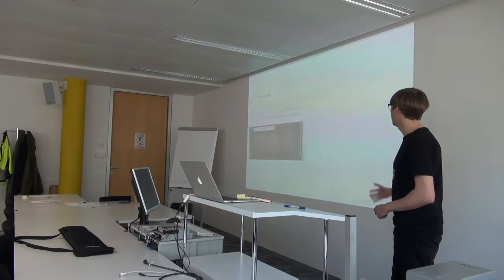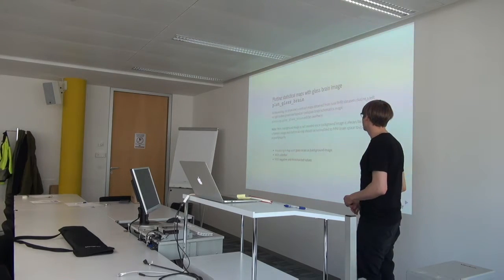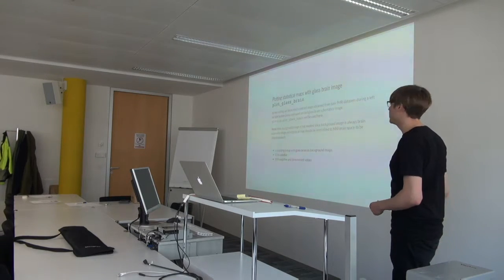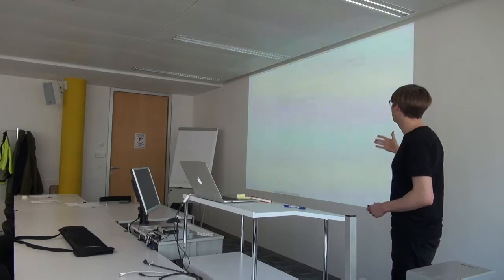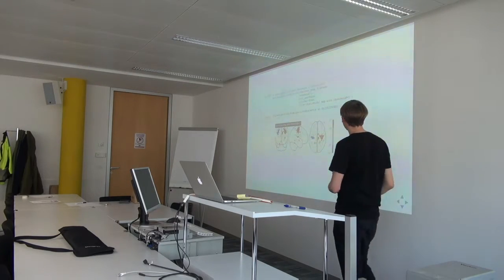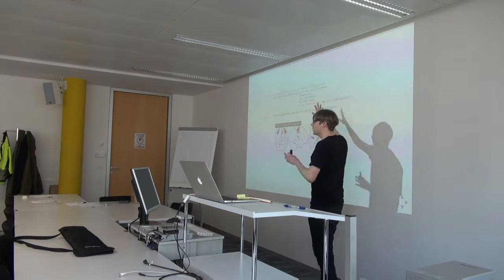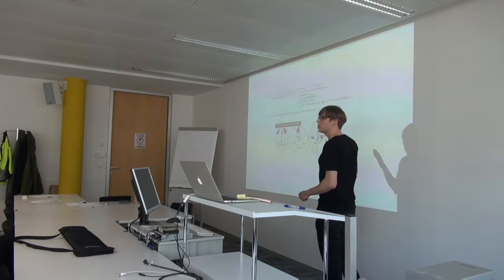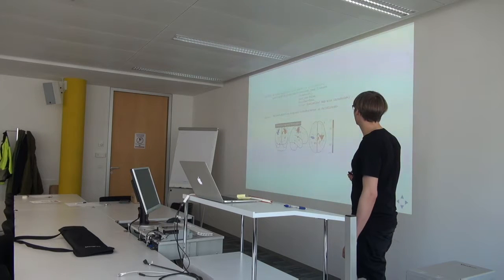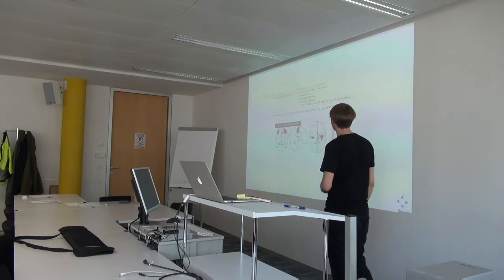We can also use the glass brain image and do something very similar — take the stat map, threshold it, and overlay it over a glass brain. We can also inquire about the options by writing help(plot_glass_brain) to see all the available options.